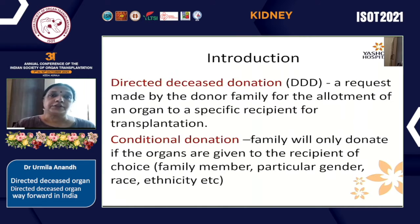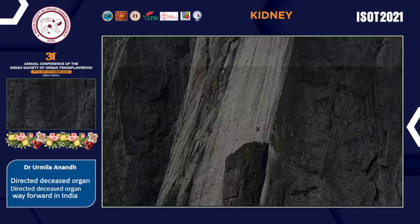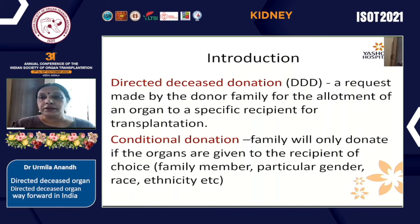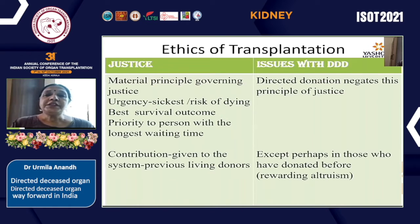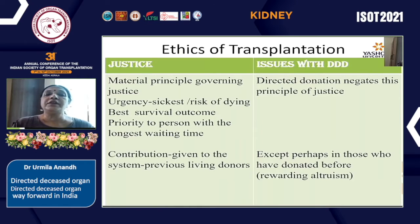Directed deceased donation is a request made by the donor family for the allotment of an organ to a specific recipient for transplantation. Conditional donation is a situation where the family will only donate if organs are given to a recipient of choice — a family member, or a particular gender, race, or ethnicity. Conditional donation is not practiced anywhere worldwide. The principles governing ethics of transplantation include the principle of justice, where the organ should be allocated to the person who is sickest and at highest risk of dying, and also matched to the person with the best survival outcome.